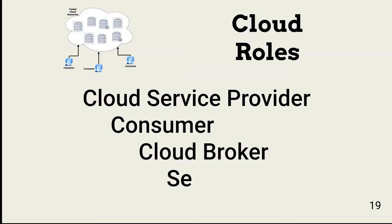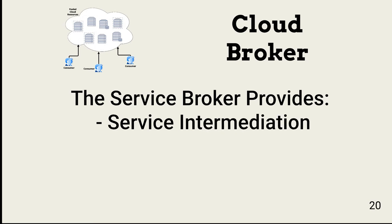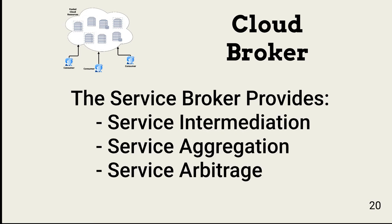Now let's look at roles. We've already looked at two roles: cloud service provider and consumer. The two new roles are cloud broker and service auditor. The cloud broker helps consumers select, implement, and manage cloud services, especially when implementing a hybrid cloud environment. Selecting the right cloud service providers, integrating secure connectivity between the clouds, and managing overall security is where the broker comes in. The broker usually provides a catalog of services. To summarize, a broker provides service intermediation — helping to select the right service providers; service aggregation — helping to securely integrate existing and new services and data flows; and service arbitrage — ensuring services continue to meet customer expectations.